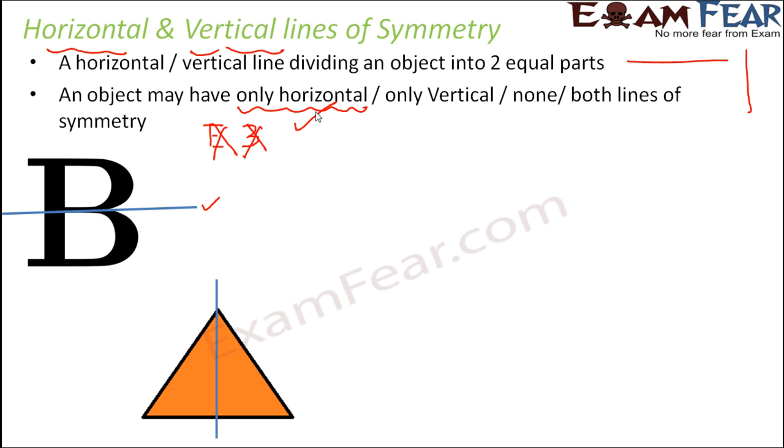So this vertical line clearly divides the triangle into two equal halves. So this half and this half, they are exactly identical and equal and they overlap each other. So definitely this vertical line of symmetry is present in the triangle.